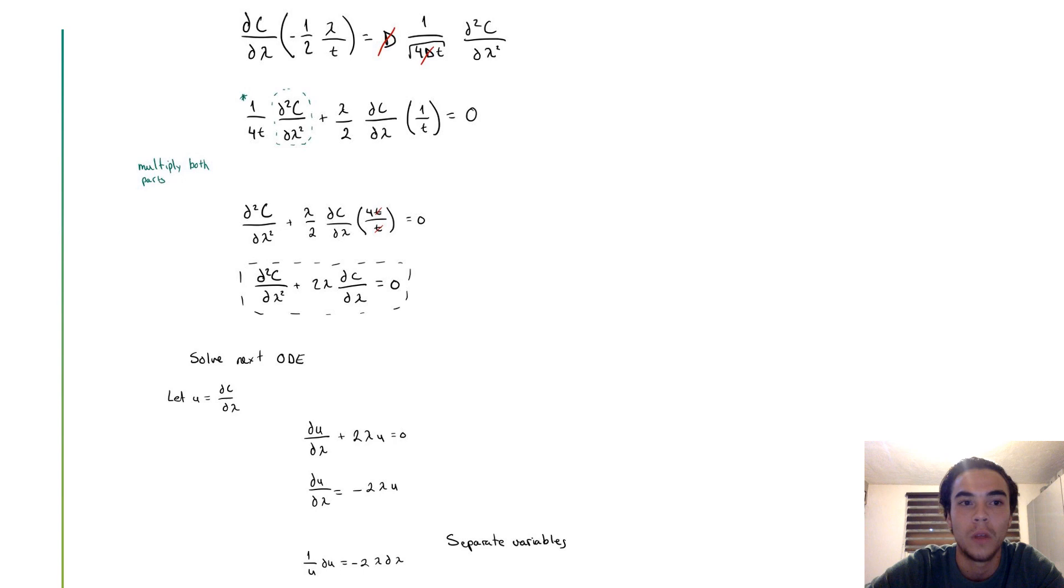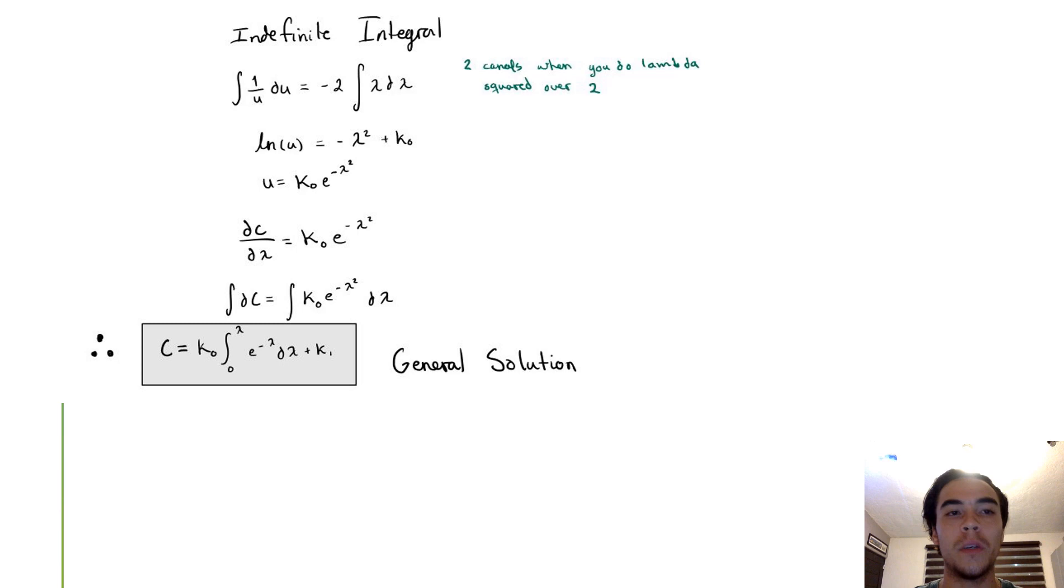We solve it, letting u be dc/dλ. After we separate the variables, we can now solve our indefinite integral. On one side, we obtain log u and on the other side, we obtain minus λ² plus k₀. After unfolding our u and coming back to dc/dλ, we finally come to the general solution.